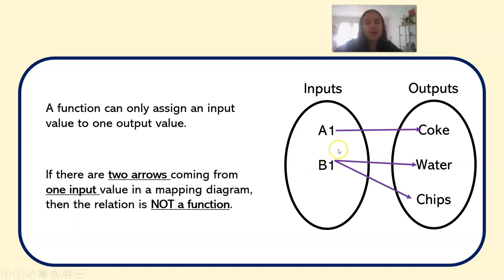If there are two arrows coming from one input in a mapping diagram, then the relation is not a function. So this is not a function because there's two arrows coming from one input. So not a function. This is what makes this not a function. Those two arrows, I have two things coming out of B1.